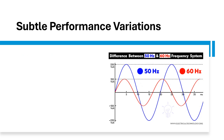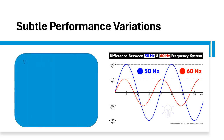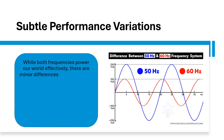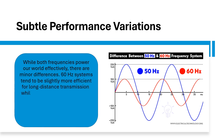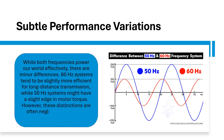Subtle performance variations. While both frequencies power our world effectively, there are minor differences. 60 Hz systems tend to be slightly more efficient for long-distance transmission, while 50 Hz systems might have a slight edge in motor torque. However, these distinctions are often negligible in practical applications.